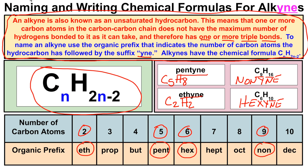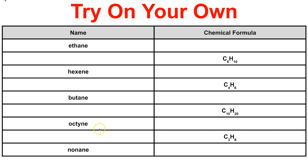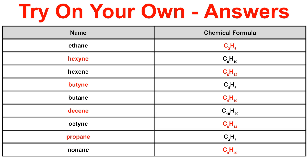That's how we name and write chemical formulas for alkanes, alkenes, and alkynes. Now let's look at some practice problems. Pause the video and try these on your own: find the chemical formula for ethane, name C₆H₁₀, write the chemical formula for hexyne, and name C₄H₆. Here are the answers — hopefully you got them all right and you're a pro at naming alkanes, alkenes, and alkynes! If you like what you see, click the subscribe button in the bottom right corner, and feel free to leave comments or questions below.